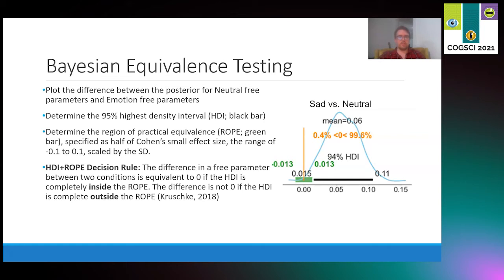If the HDI were entirely outside of the ROPE, we would decide there was a substantial difference between conditions. The ROPE here was specified as half of Cohen's small effect size, so we tested for small effects or greater. Any overlap between the HDI and ROPE that doesn't fit within those two criteria would be considered weak evidence and just left to interpretation.